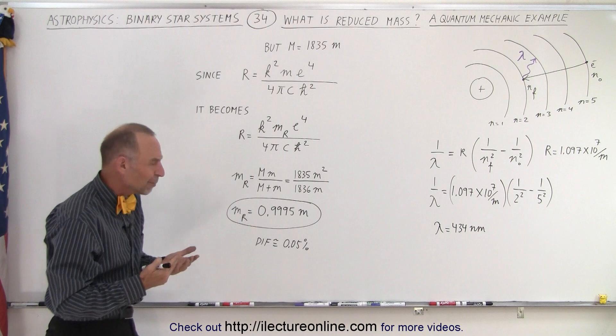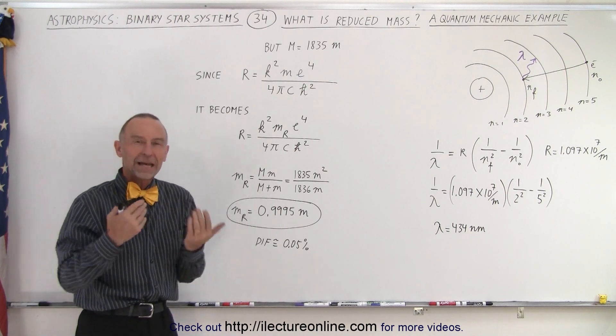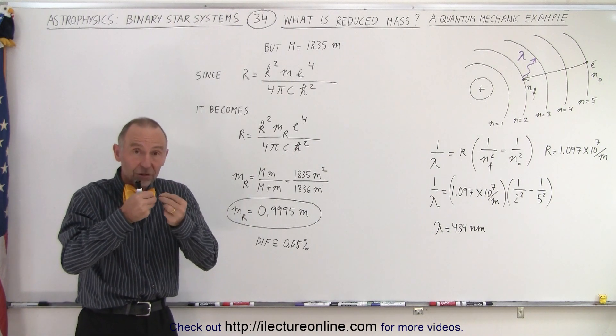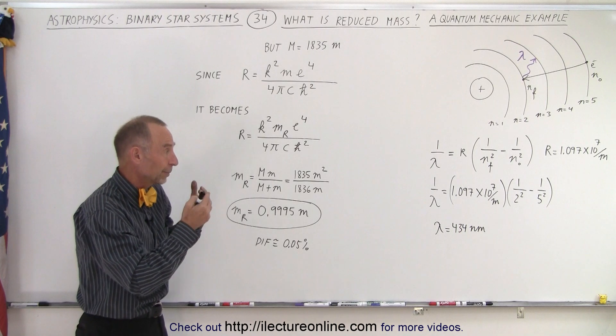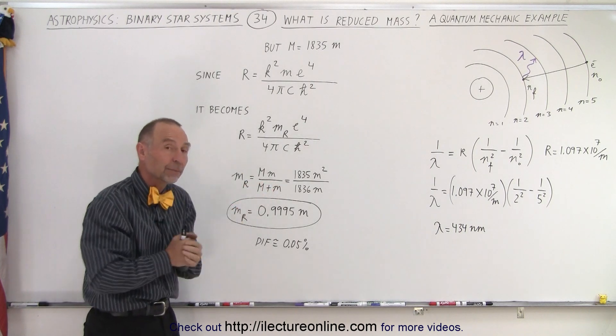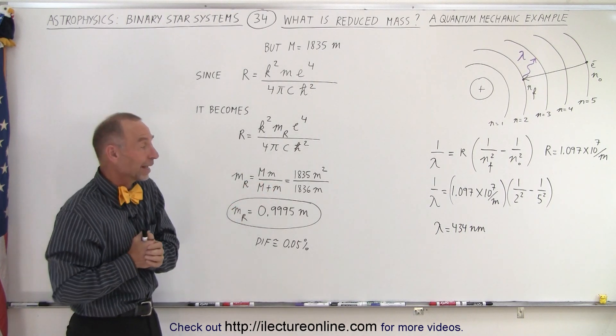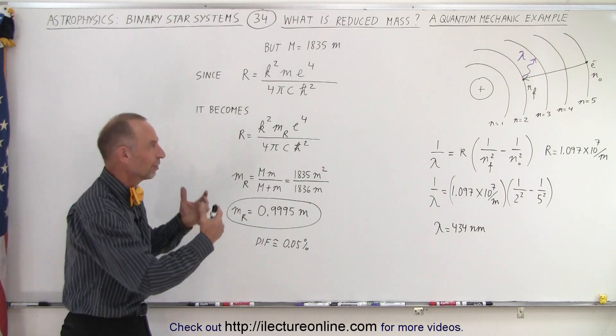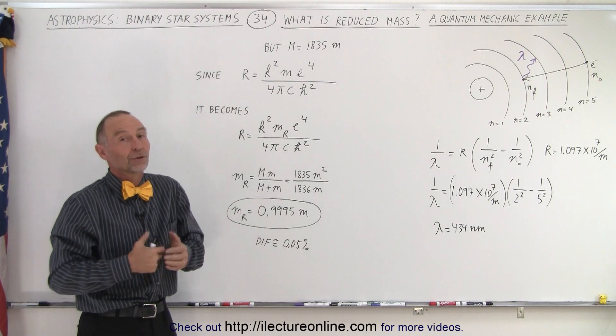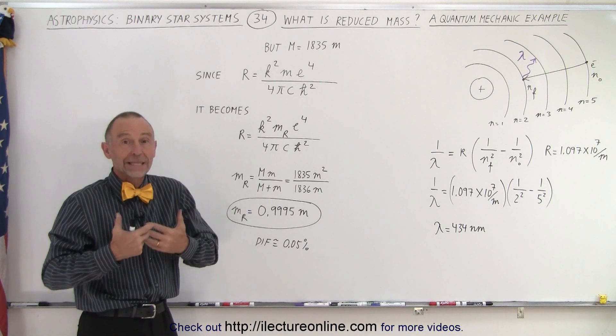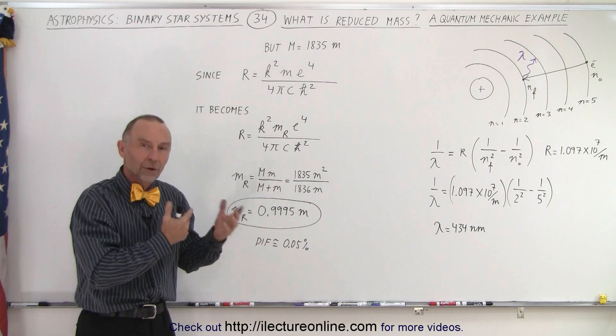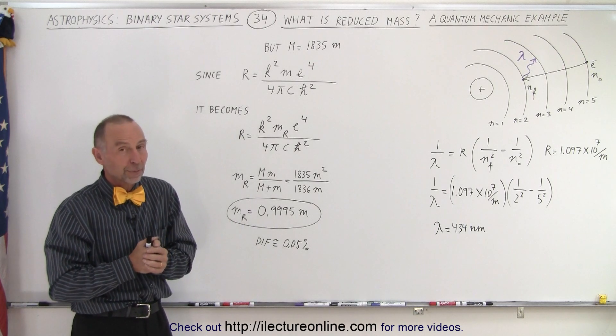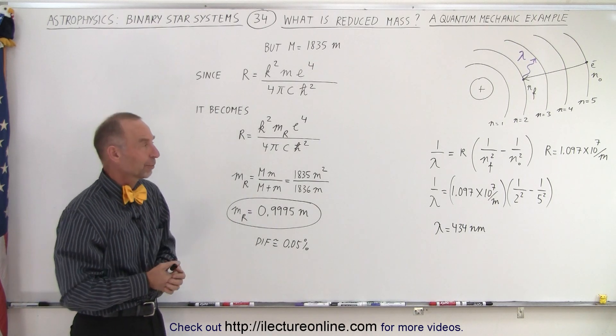You can see that the reduced mass is simply not a mathematical construct, it's an actual physical construct. In order for us to get the correct values out of experimental results like that, we do have to use the reduced mass because it gives us the correct physical phenomenon that we're dealing with. The reduced mass is really the reality of what's going on from both a mathematical perspective as well as a physical perspective.